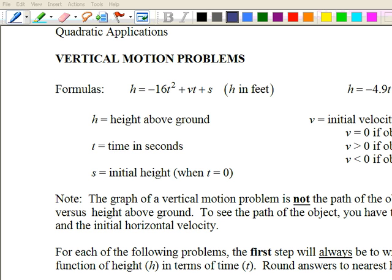Note that the graph of a vertical motion problem is not the path of the object — it simply tells you the height at a given time, so time elapsed versus height above the ground. For each of the following problems, the first step will always be to write the appropriate quadratic function of height h in terms of time t. Round answers to the nearest hundredth when necessary.